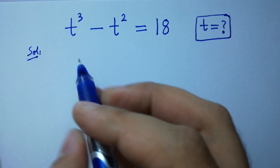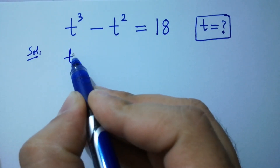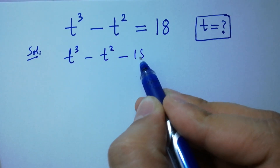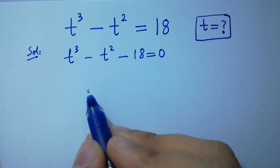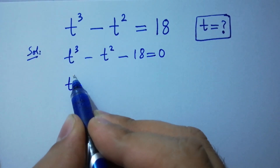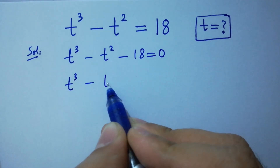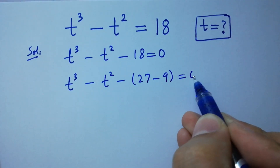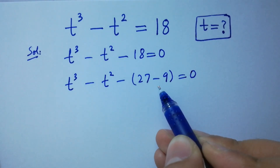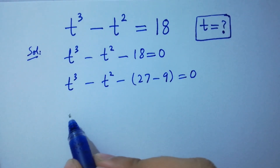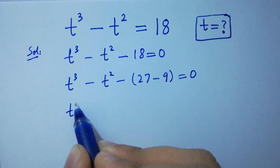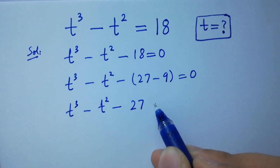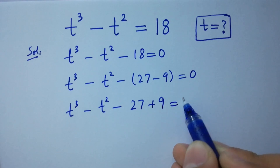It can be written as t cubed minus t squared minus 18 equal to 0, which is the same as t cubed minus t squared minus 27 minus 9 equal to 0, since 27 minus 9 is 18. So, t cubed minus t squared minus 27 plus 9 equal to 0.